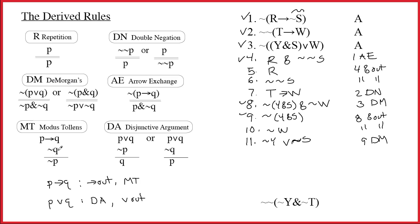To do modus tollens, you need the negation of Q. If you're a porcupine, then you have quills — if you don't have quills, then you're not a porcupine. Looking at T arrow W, the negation of Q would be tilde W. I go look and find tilde W right there. So: if T then W, not W, therefore not T. You add a tilde to P when you do modus tollens. This is a two-line rule, so we cite both lines 7 and 10 in the justification: 7, 10, modus tollens.